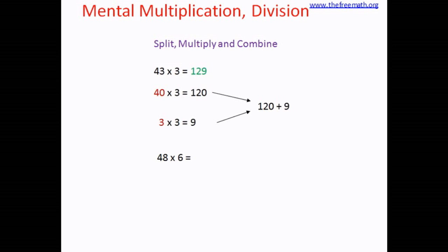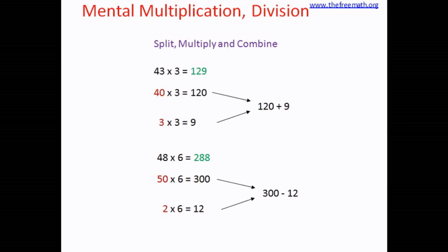Because 48 is closer to 50, we can write 48 as 50 minus 2. So we split it as 50 and 2, and multiply both by 6. 5 sixes are 30, so 50 sixes are 300. 2 sixes are 12. When you combine, you subtract: 300 minus 12 gives 288. So the product is 288. Split in whatever way is more convenient.